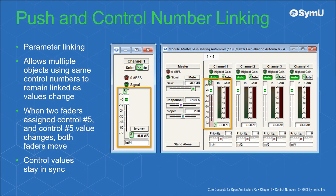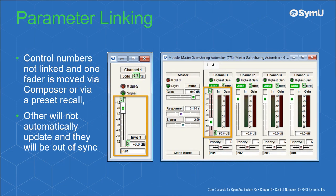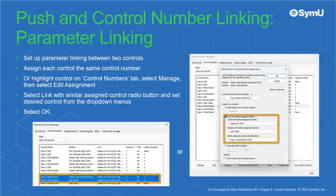Parameter linking allows multiple objects using the same control numbers to remain linked as their values are changed. For example, when two faders are both assigned to control number 5, when the control value of control number 5 changes, both faders will move and their control values will stay in sync. If the control numbers are not linked and one of the faders is moved via Composer or via Preset Recall, the other will not automatically update and they will be out of sync. To set up parameter linking between two controls, assign each control the same control number. Or highlight the control on the Control Numbers tab, select Manage, then select Edit Assignment. Select the link with similar assigned control radio button and set the desired control from the drop-down menus, then select OK.